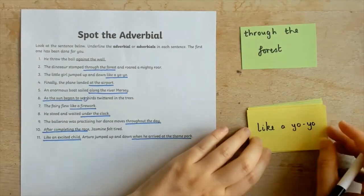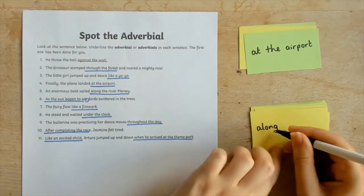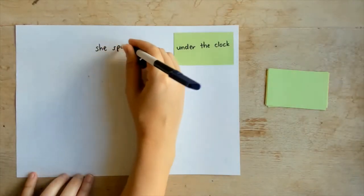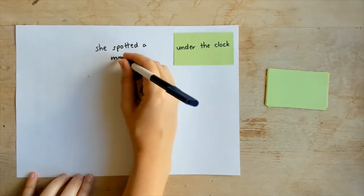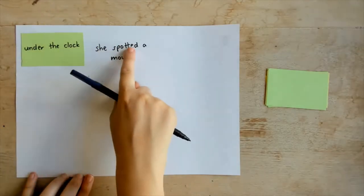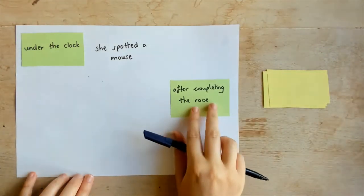As an extension, copy the found adverbials onto cards. Place them face down and pick the top card. Can your children think of another sentence which includes this adverbial? Can they use it at the start of the sentence to create a fronted adverbial? These could be spoken or written down.